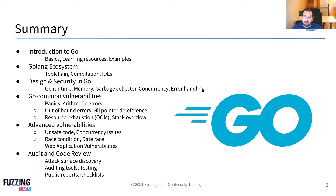Finally, I'm going to show you a bunch of auditing tools that will help you during code review. These are open-source tools that are well-used and definitely worth integrating — even for developers — directly into your CI in order to detect any issue each time you do a pull request or something like that. That will be the global summary of the first day.